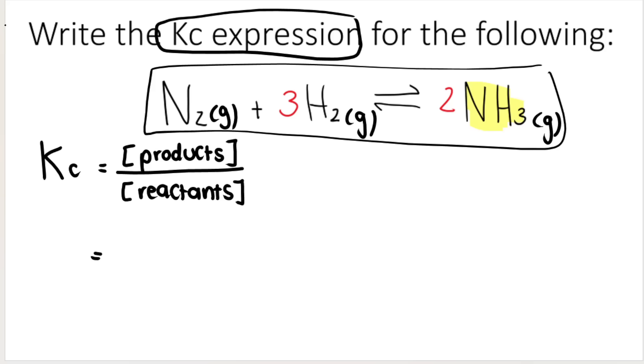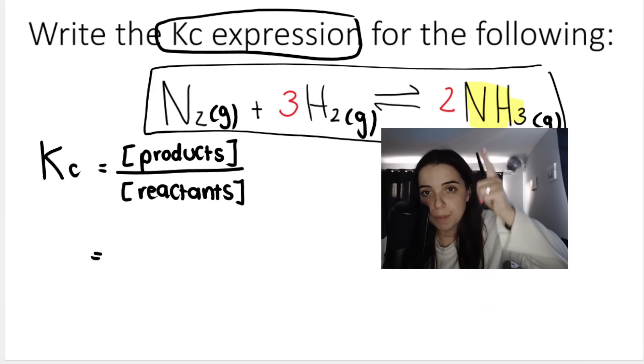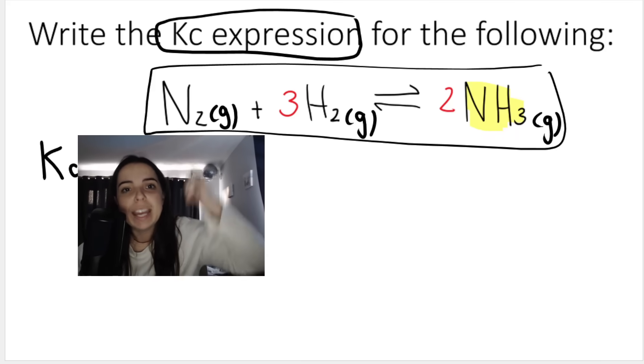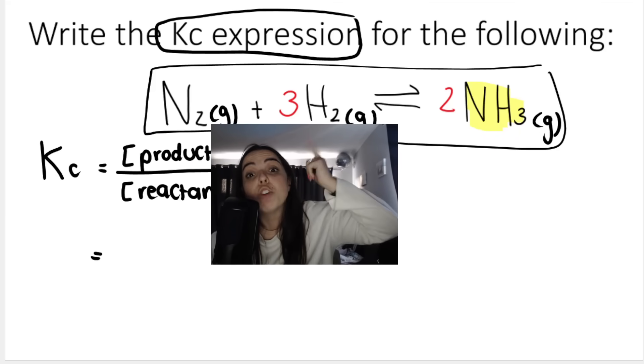Very, very important. Remember, we said if it's a gas, it can be included in the Kc value. So this is my product over here. NH3 is my product. N2 is a reactant. H2, hydrogen, is a reactant.